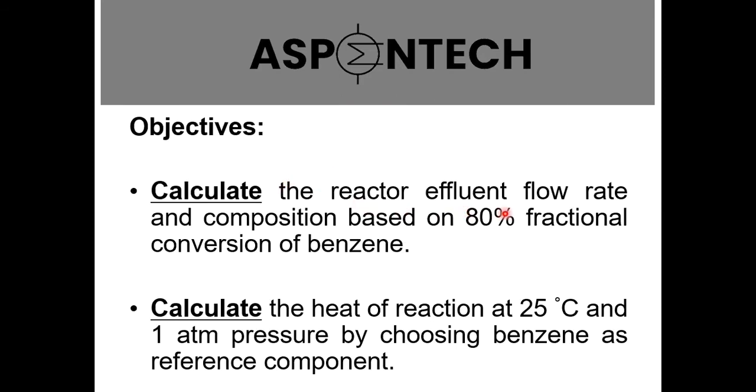Calculate the reactor effluent flow rate and composition based on 80% fractional conversion of benzene. So you can say that this R-stoic is basically a conversion reactor in which you have to provide the stoichiometry and then you have to provide the percentage conversion as well.